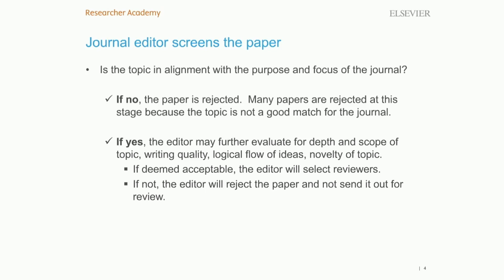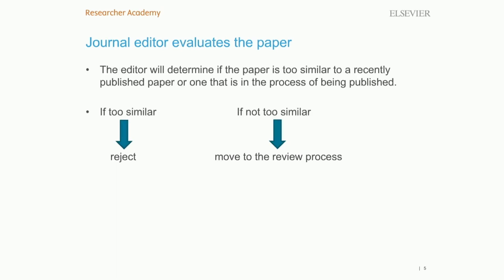If the editor deems that the topic of the paper is a match, the editor will further evaluate the paper for its depth and scope of how the author has addressed the topic. The editor will scan for the quality of the writing, the logical flow of ideas, and the novelty or new slant on the topic provided by the author. If the paper is acceptable at this initial evaluation, the editor then moves to selecting reviewers. The editor will also determine if the paper is too similar to a recently published paper or one that is in the process of being published.